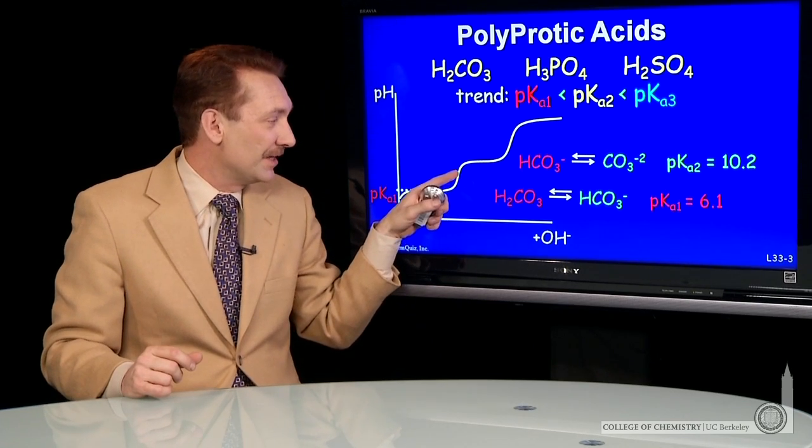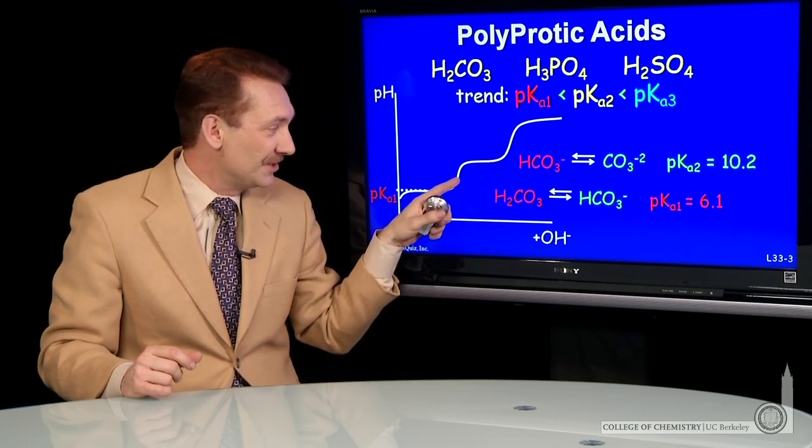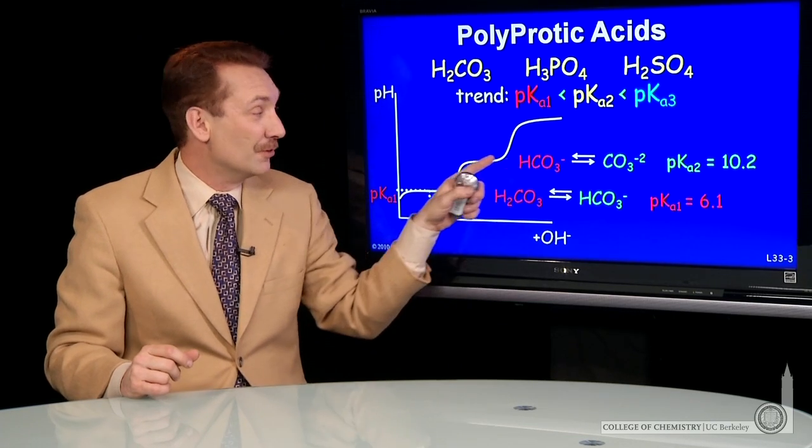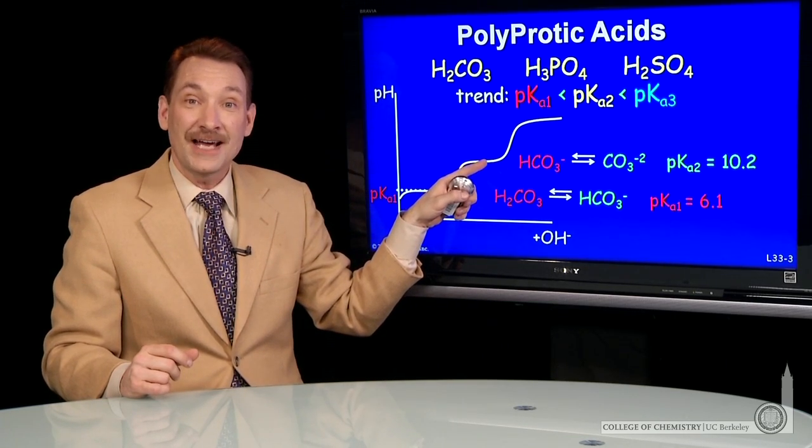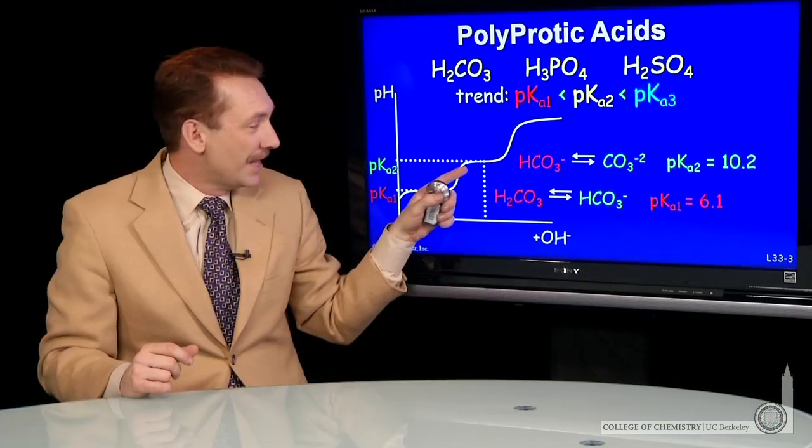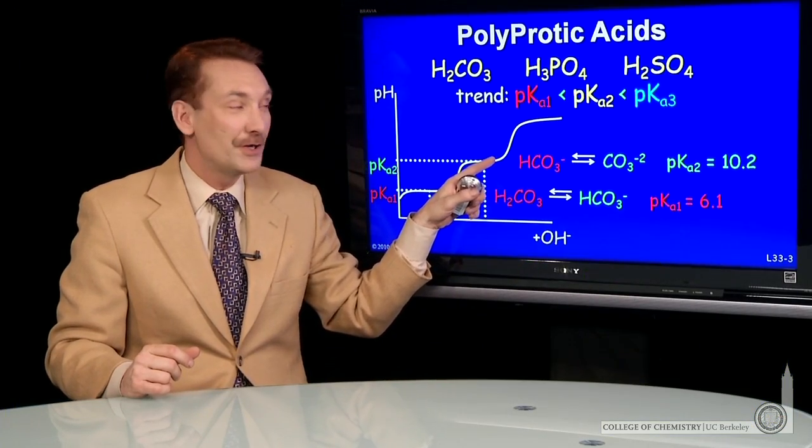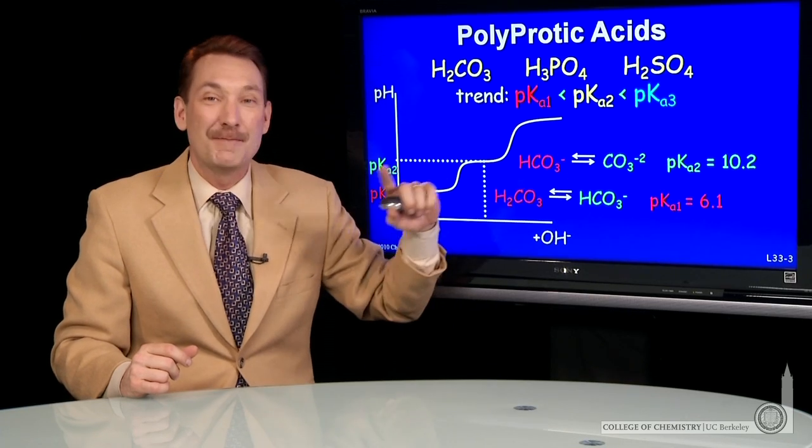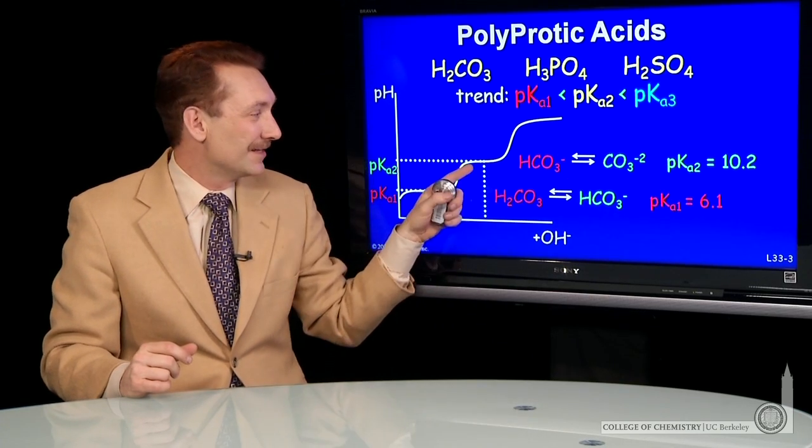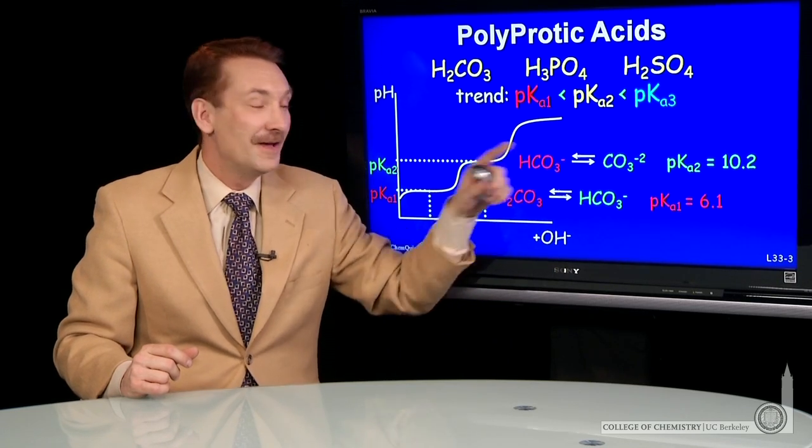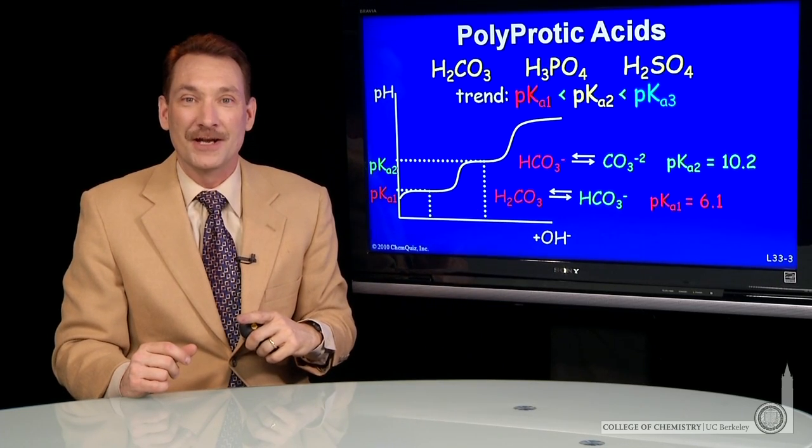And that species, there'll be 100% that species at the first equivalence point. And then this proton will start to be removed around the second half equivalence point, the second buffer region. And that's around pH 10.2. As you pass through pH 10.2, then the doubly deprotonated, the doubly basic form predominates. And then you'll get to an equivalence point where it's 100% essentially of the doubly deprotonated form.